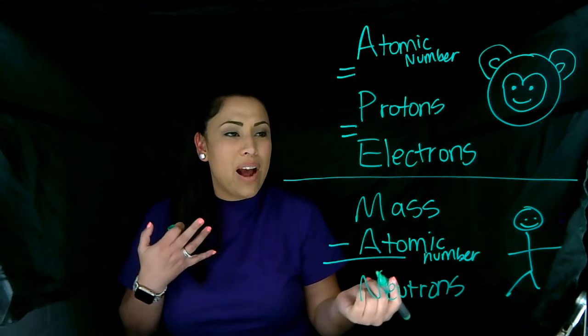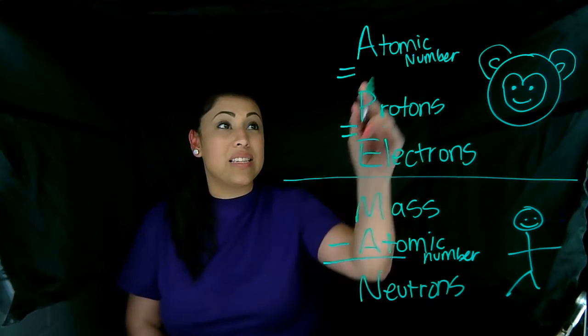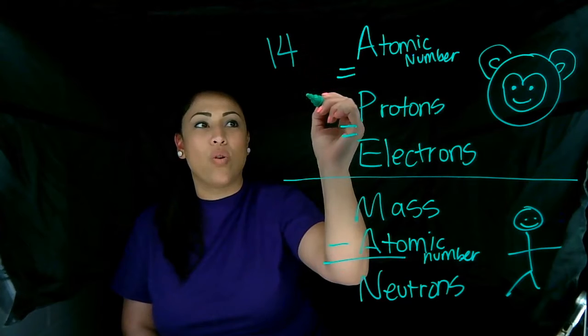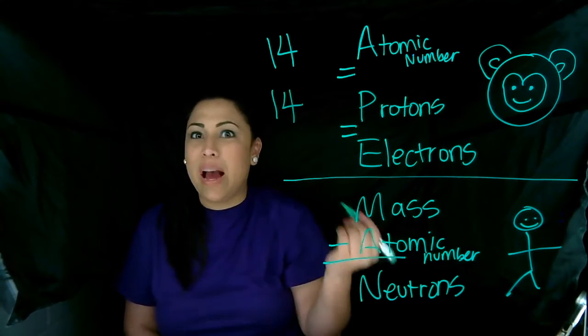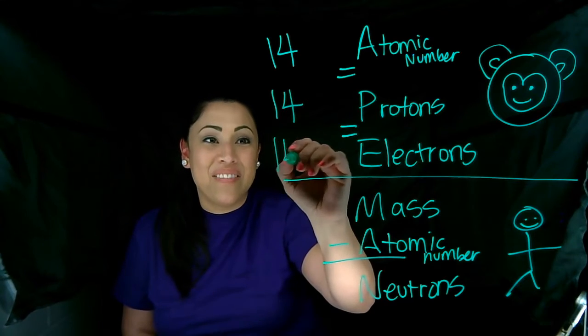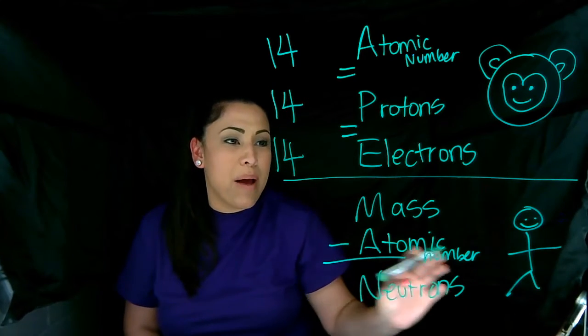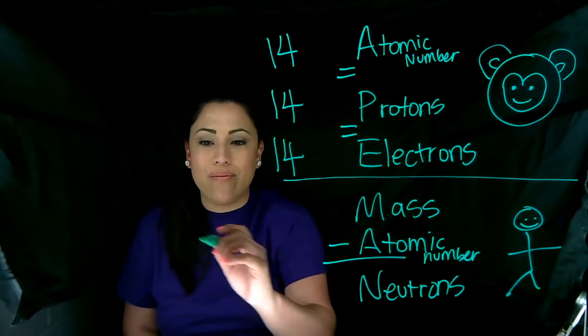So now if we look at silicon, silicon's atomic number was what? 14. So how many protons does it have? 14. How many electrons does it have? 14. Now, our mass was 28.085.